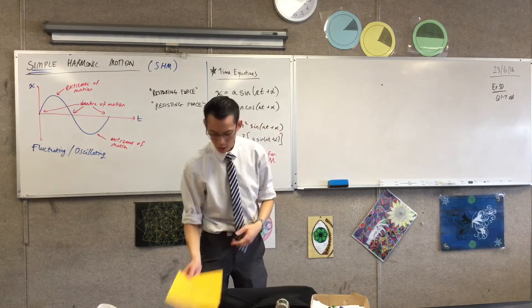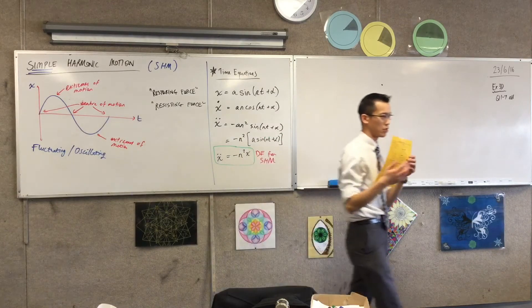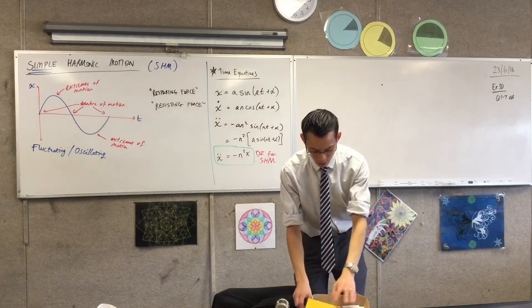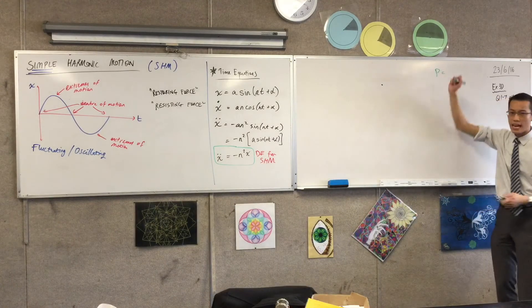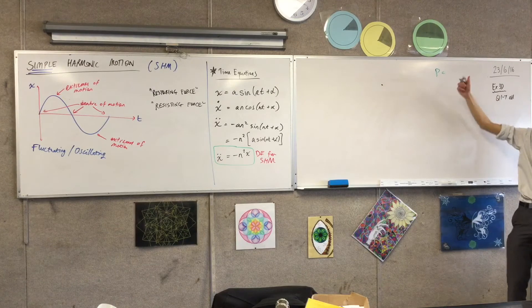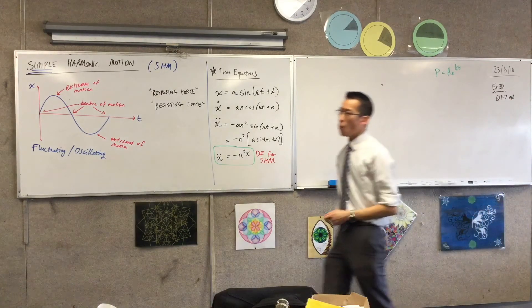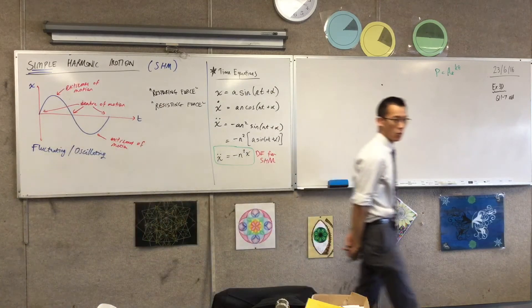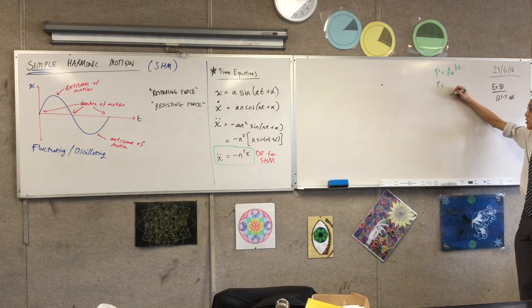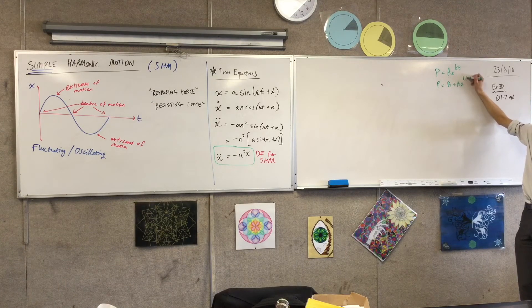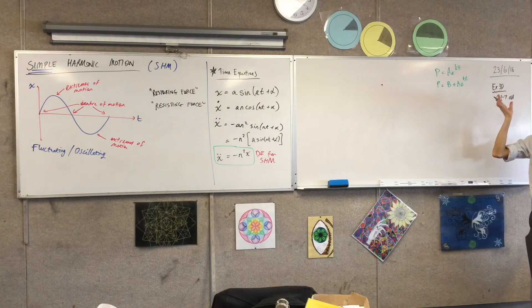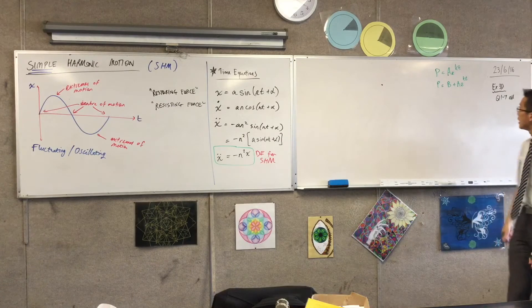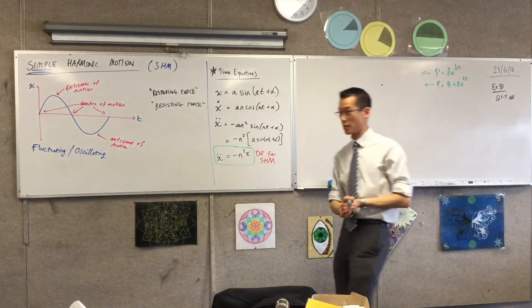You have simple harmonic motion on your reference sheet on the Extension One page. What they do is extend this just a little bit. Do you remember when I gave you the equations for population, temperature, whatever it is, in exponential growth and decay? What made it Extension One growth and decay — what crossed that line — was just a constant added in, for example B plus or B minus some combination. We call this modified growth and decay.